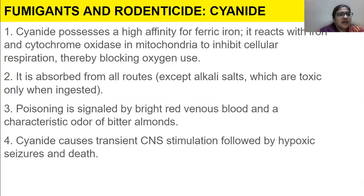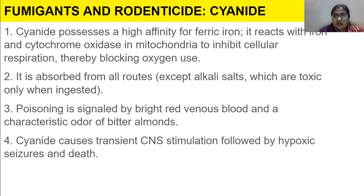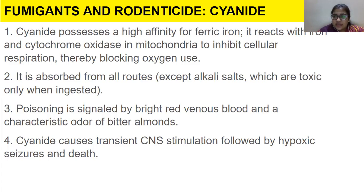The next category we want to talk about is cyanide poisoning. These are fumigants and rodenticides - as the name indicates, they kill rats and rodents. Cyanide possesses a high affinity for ferric iron. Ferric iron is found in the electron transport chain during oxidative phosphorylation, and also within the mitochondria in cytochrome oxidase.